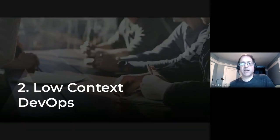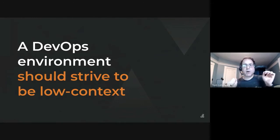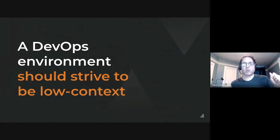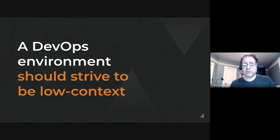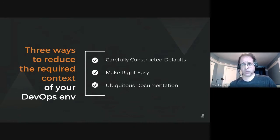Part two of my talk: low context DevOps. I'm going to make this assertion: a DevOps or SRE environment should be low context. We should spend more time doing technical work, less time frustrated with roadblocks and information gaps, wondering 'how could I have known that?' But most of all, we shouldn't just change the light bulb — we should fix the damn sign. There are three ways to reduce the required context of your DevOps environment: carefully constructed defaults, making right easy, and ubiquitous documentation.